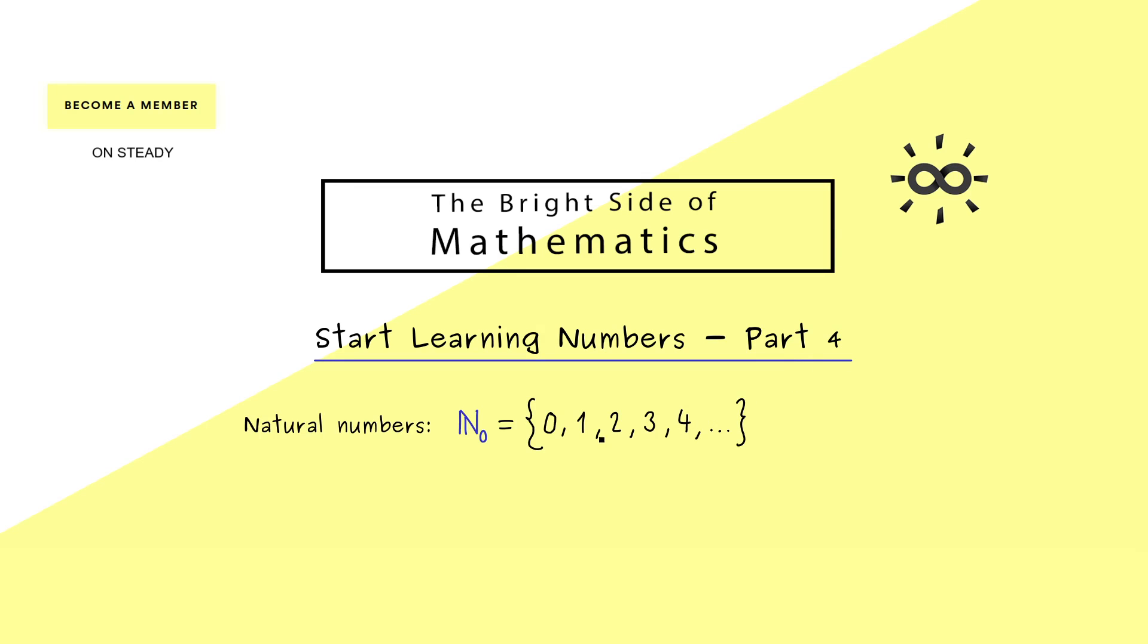In this part 4 we are still talking about the natural numbers which we defined as N₀ starting with the number 0. Moreover, we have already learned the addition is a binary operation which means a map from the Cartesian product into the natural numbers again. And we also know some properties of this operation, so let's summarize them into 3 parts.